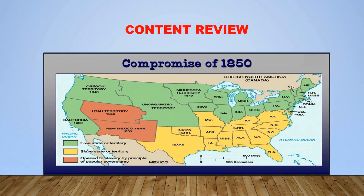The Compromise of 1850 consists of five laws passed in September of 1850 that dealt with the issue of slavery. In 1849, California requested permission to enter the Union as a free state, potentially upsetting the balance between the free and slave states in the U.S. Senate. Senator Henry Clay introduced a series of solutions on January 29, 1850 in an attempt to seek a compromise and avert a crisis between North and South. As part of the Compromise of 1850, the Fugitive Slave Act was amended, and the slave trade in Washington, D.C. was abolished.